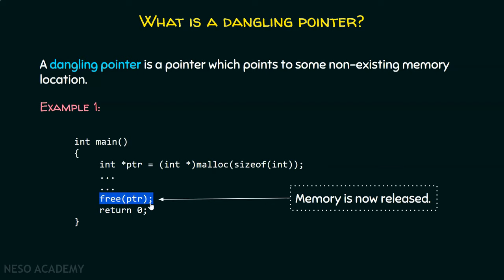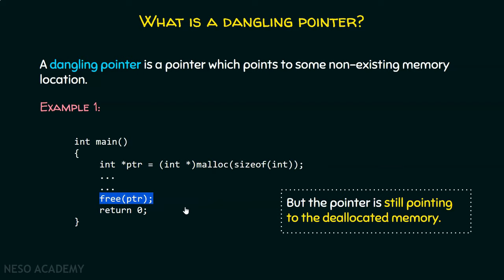So here in this case, you can clearly see that we are de-allocating the memory after using it. But you should understand that the pointer PTR is still pointing to the de-allocated memory. Let us assume the address of the first byte of the memory is 1000. PTR still contains that address even after de-allocating the memory, because we haven't re-initialized the pointer. That is why PTR is called a dangling pointer.